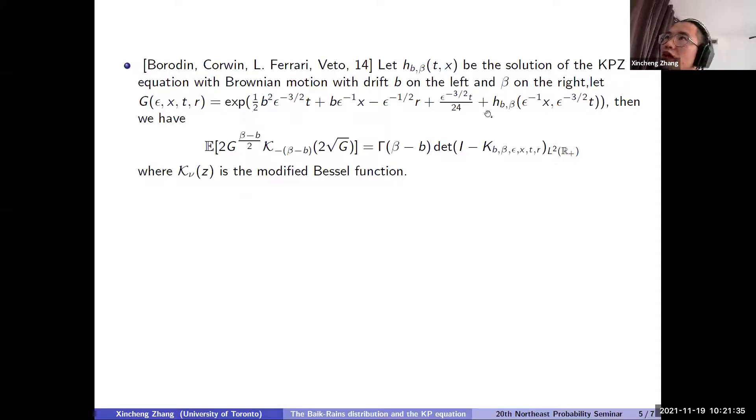Okay, and here the function G, you should think of this function G as some normalized version of the height function. So you have height function here and you have T to the, some linear term in T and a term R. And here, these are the two terms involving b, which will disappear eventually. And this is on the exponential level. And then this equation, on the left-hand side of this equation, this is some transform of this function G. The function K in the middle is the modified Bessel function. And on the right-hand side, we have a determinant formula. So this is a Fredholm determinant. You should think of this as like an analog of the matrix determinant. And the kernel K here depends on variable b,β,ε,X,T,R.